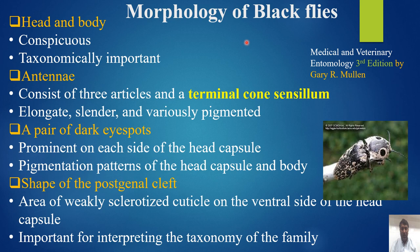Morphology — head and body: conspicuous and taxonomically important features include the antennae, which consist of three articles in the terminal flagellomere, and are elongate, cylindrical, and variously pigmented. A pair of dark eye spots is prominent on each side of the head capsule. The pigmentation pattern of the head capsule and the shape of the postgenal cleft — an area of weakly sclerotized cuticle on the ventral side of the capsule — are important for interpreting the taxonomy of the family.